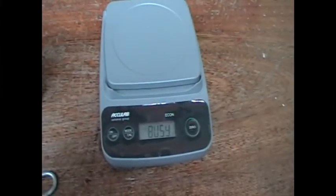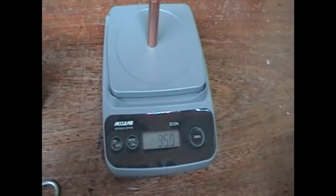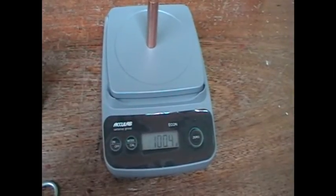Zero the electronic balance. The mass of the copper cylinder is 100.3 grams.